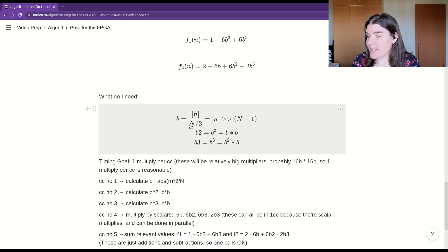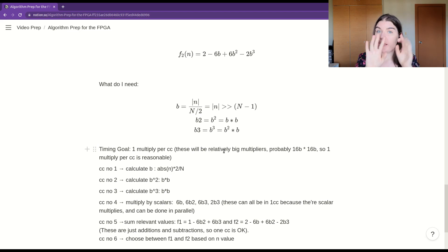So here we have the stages of what I need. I need B, which I will calculate from my counter values. Then I have B squared, which is B times B—one multiply—and then B cubed, which is B squared times B, the second multiply. My timing goal is going to be one multiply per clock cycle because these are going to be 16-bit multiplies. The first clock cycle is going to calculate B, the second B squared, the third B cubed. And so then I have B, B squared, B cubed, all lined up.